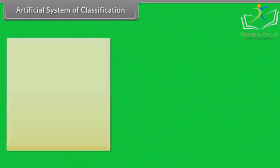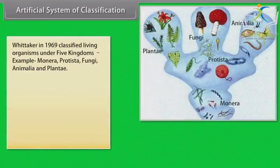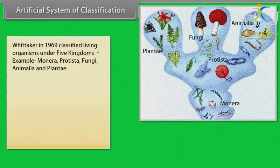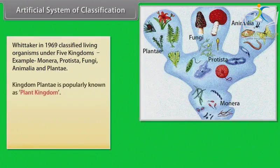Whittaker in 1969 classified living organisms under five kingdoms: Monera, Protista, Fungi, Animalia, and Plantae. Kingdom Plantae is popularly known as the plant kingdom.